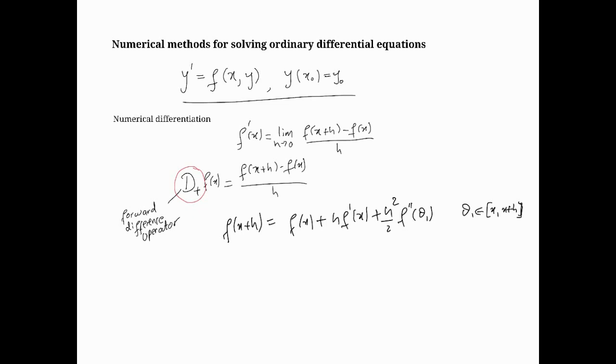You can rewrite this as f(x+h) - f(x) = hf'(x) + (h²/2)f''(θ₁), and if I divide by h, then this is just going to be f'(x) on this side plus (h/2)f''(θ₁).